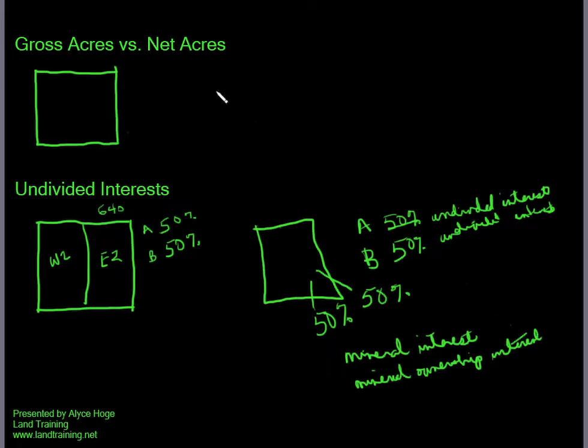Let's say we have a lease that is 160 acre lease and we have two parties. Party A owns a 50% undivided interest.